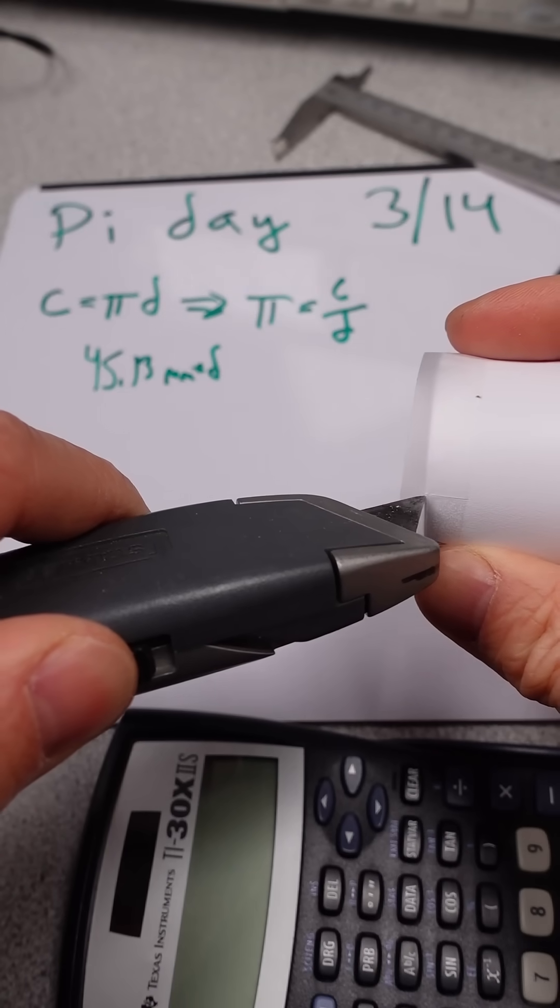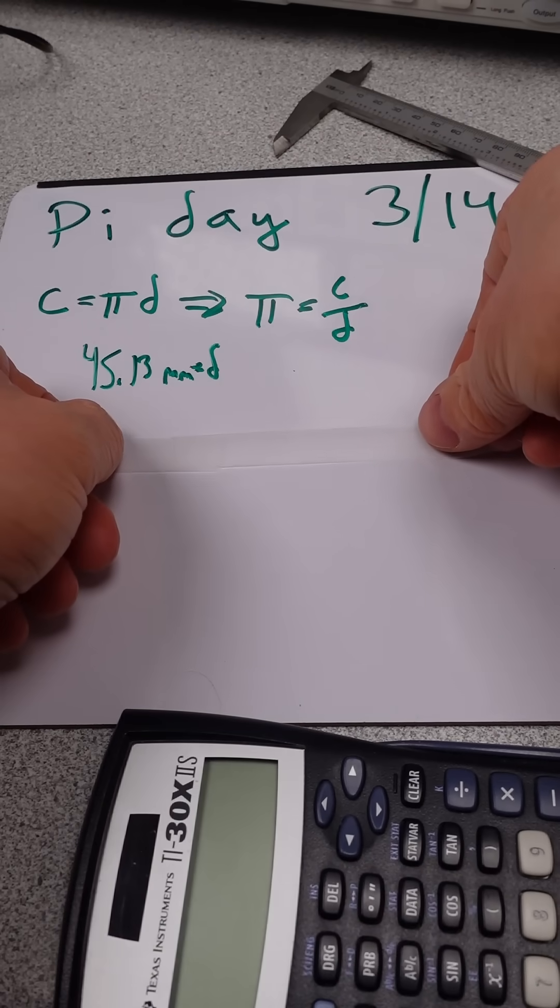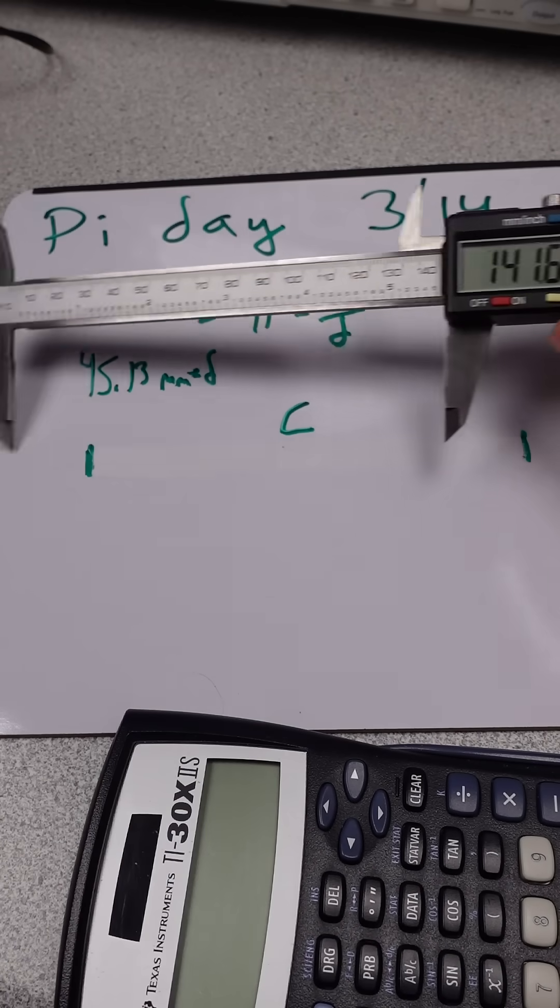The circumference from my marked paper is about 142 millimeters. The exact numbers give me pi equals 3.138. This was one take, by the way.